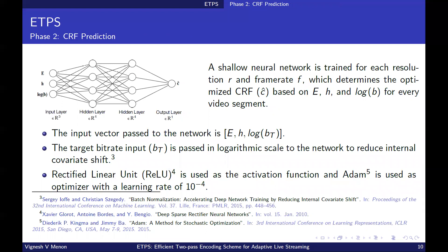The second phase of the first pass is the CRF prediction. In this paper, a shallow neural network is trained for each resolution and frame rate, which determines the optimized CRF based on the extracted features and target bitrate for every video segment. The structure of the neural network is shown in the figure here. The network consists of an input layer, two hidden layers and an output layer. The target bitrate is passed in logarithmic scale to the network to reduce the internal covariate shift. Thus, the input vector passed to the network is E, H and the log bitrate. The rectified linear unit is used as an activation function and Adam is used as an optimizer with a learning rate of 10 to the power minus 4. The output of the network is the optimized CRF.